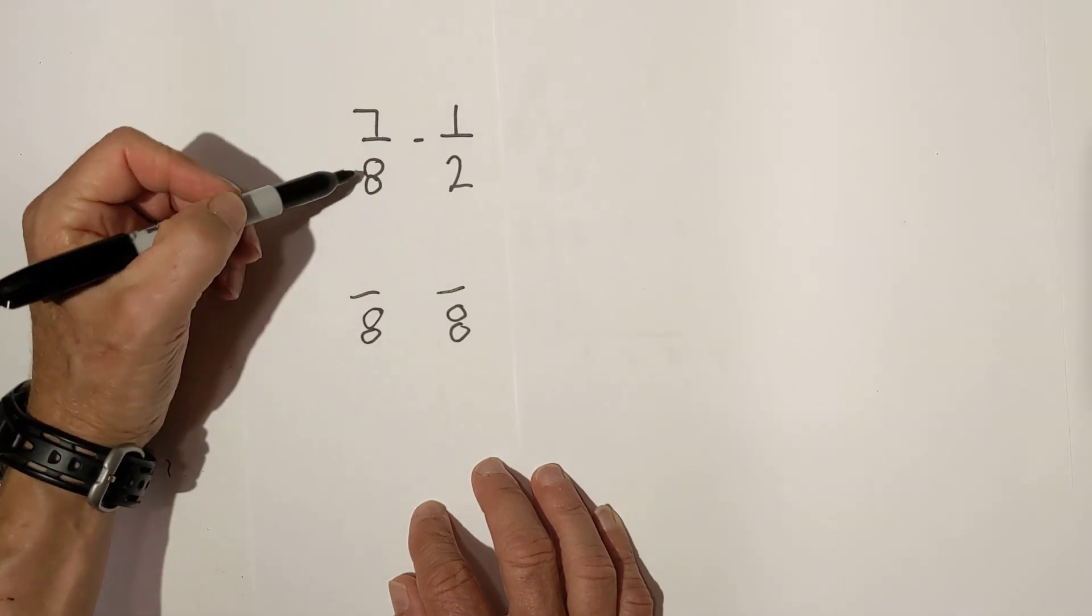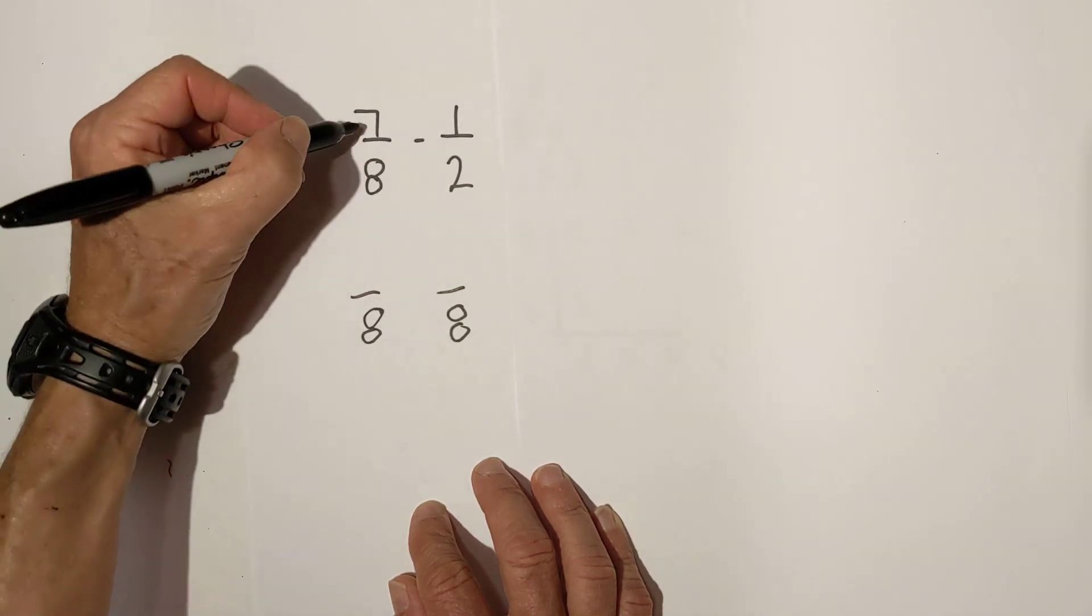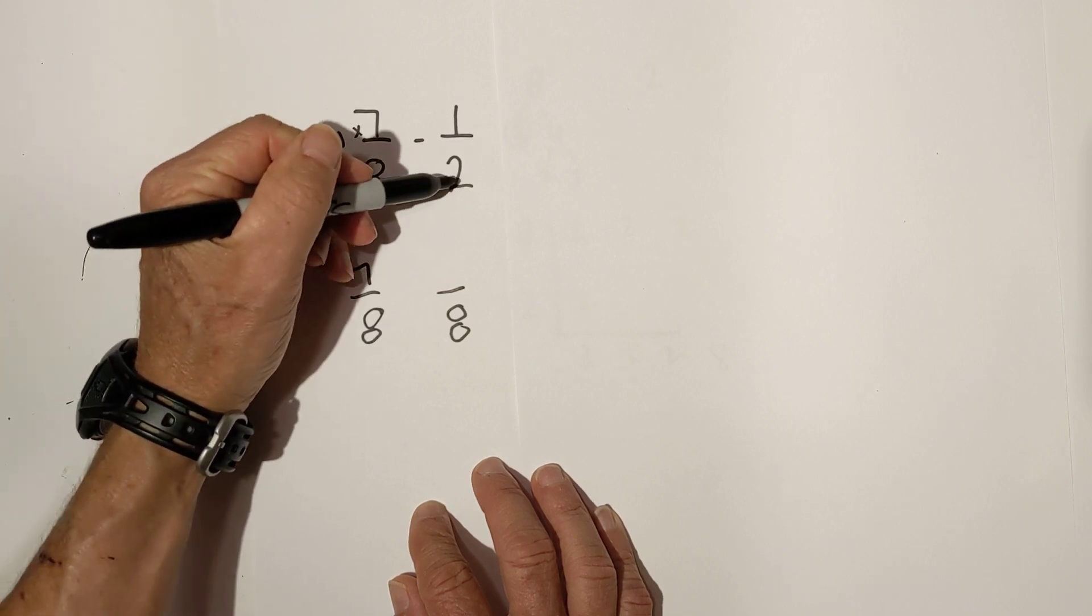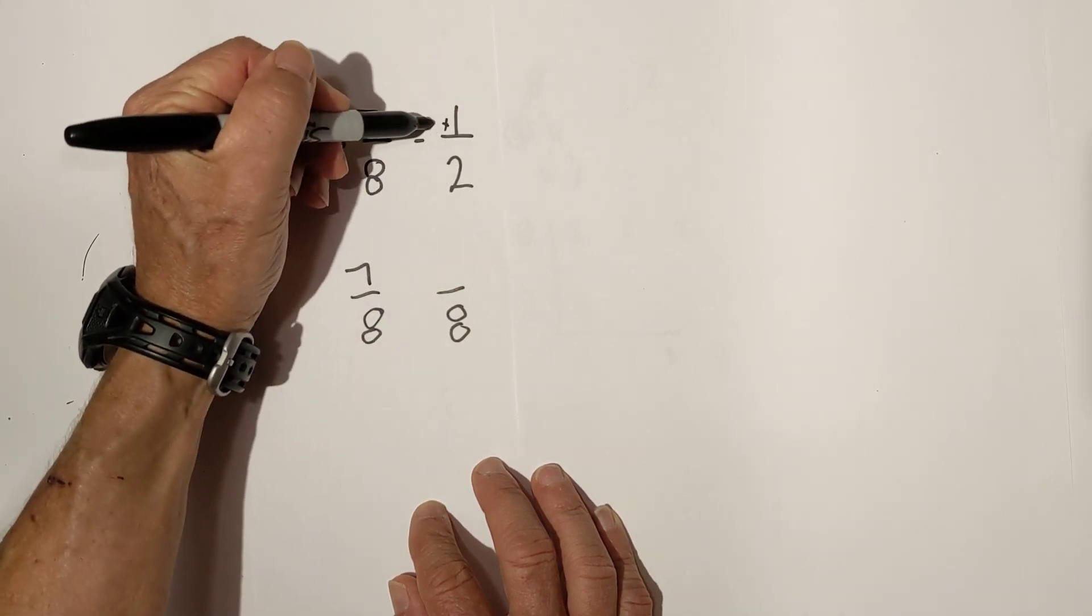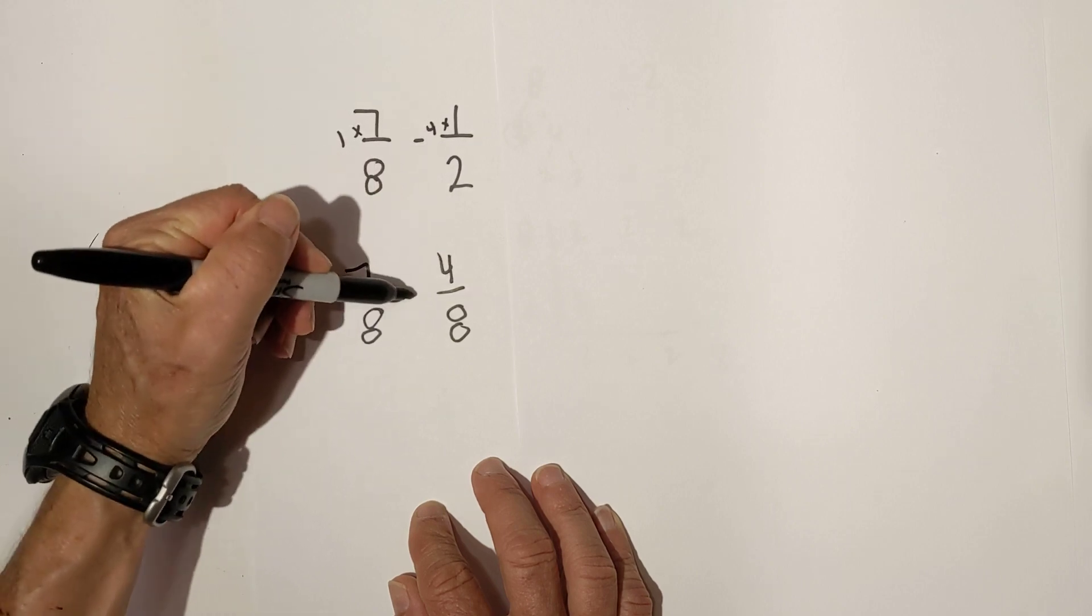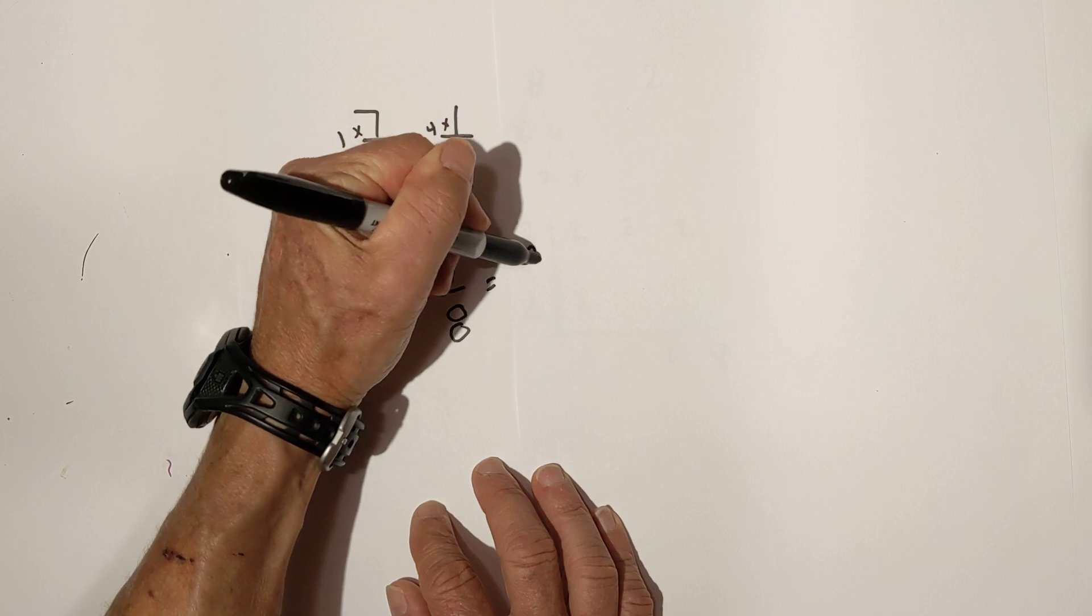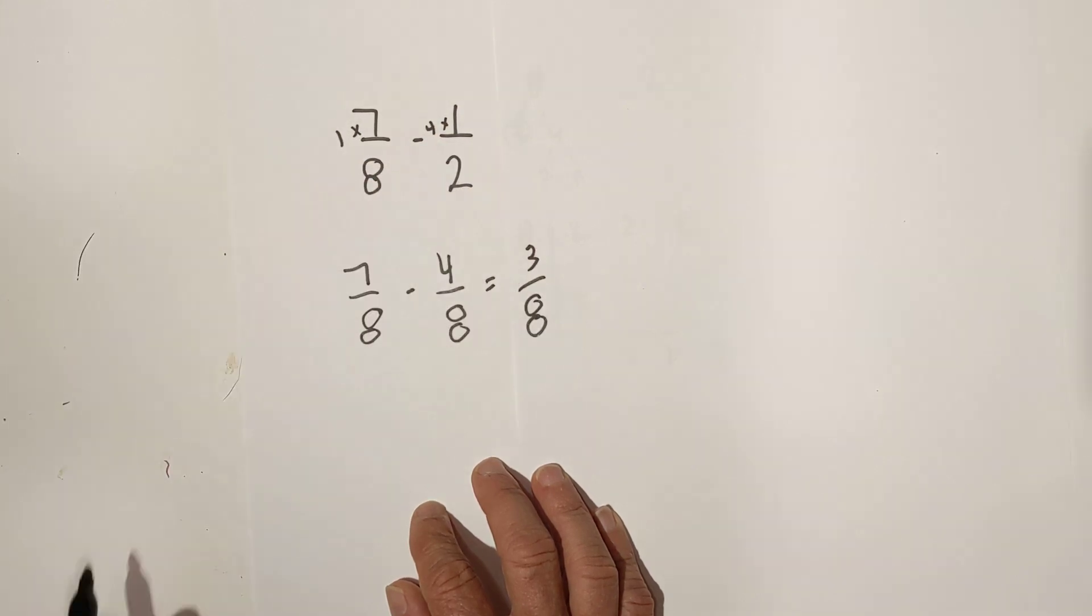8 goes into 8 one time. 7 times 1 is 7. And 2 goes into 8 four times. 1 times 4 is 4. 7 minus 4 equals 3/8.